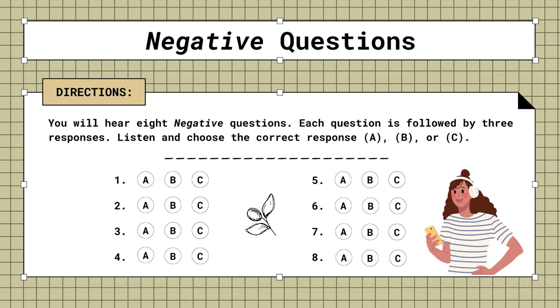Mini-test. Negative questions. You will hear eight negative questions. Each question is followed by three responses. Listen and choose the correct response. A, B, or C.